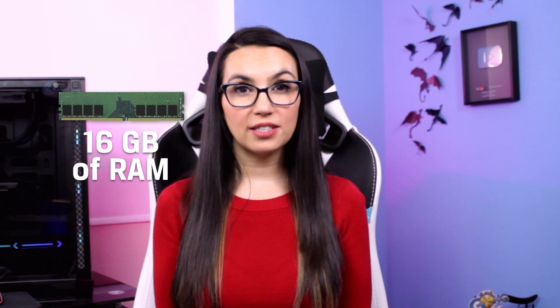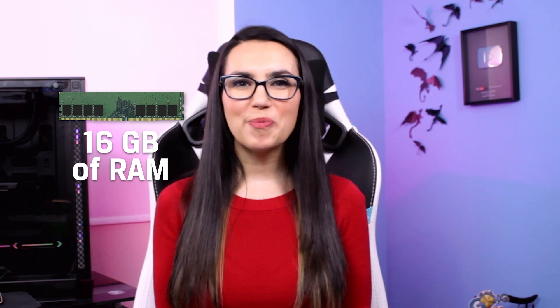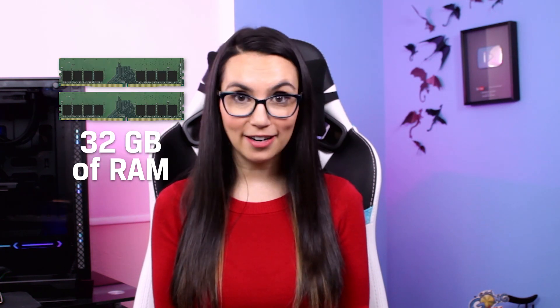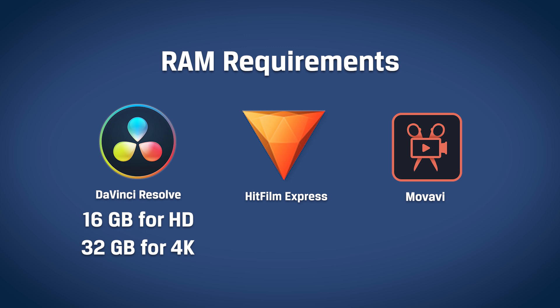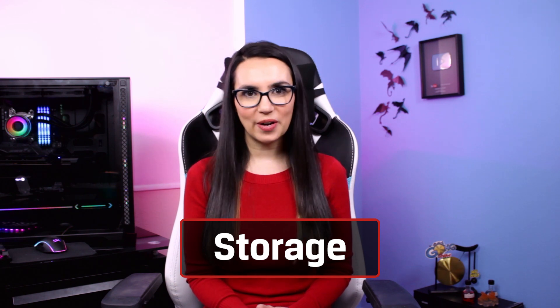With hardware in mind, let's discuss some of the basic hardware requirements you'll need to get started editing, as well as more specific requirements for each of the software options we've already discussed. Regardless of software, if you'll be working with projects ranging from 1080p to 4K, you'll want at least 16GB of RAM. For lots of higher resolution footage while also running background projects, you'll probably want to upgrade to 32GB of RAM or higher. DaVinci Resolve will require the most RAM, recommending 16GB for basic HD editing and 32GB or more for 4K. HitFilm Express requires at least 4GB but recommends 8GB or more, and Movavi only requires 256MB of RAM at minimum.